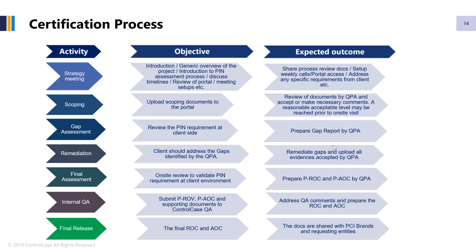Next we move into scoping. Depending on the services being provided — whether it's a key injection facility, certificate authority, or acquiring institution — we make sure we right-size the scope with no surprises later. Once we have finalized the scope, we move into gap assessment. We follow a partnership approach, working iteratively with you to do a gap assessment and guide you towards any remediation activities. We don't do the remediation — that's the customer's responsibility — but we guide you on the right strategies to help you achieve compliance and, most importantly, secure the PIN.